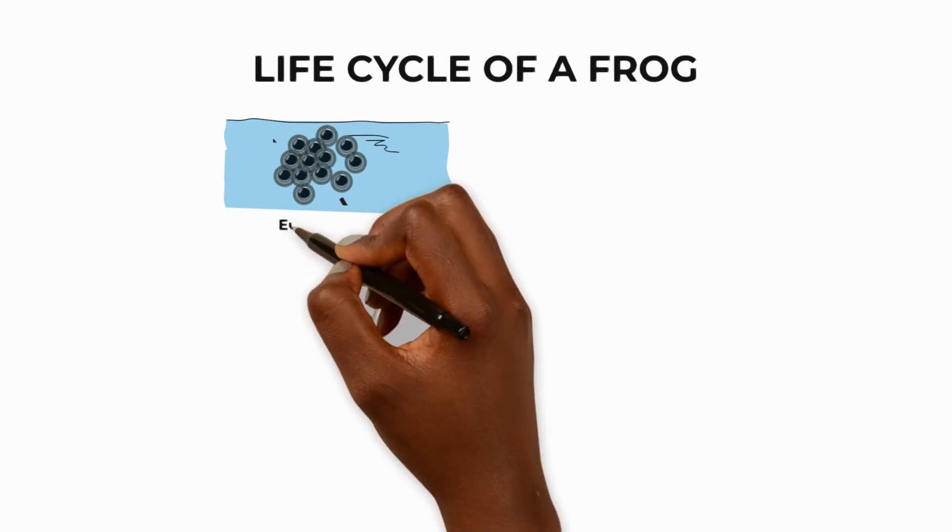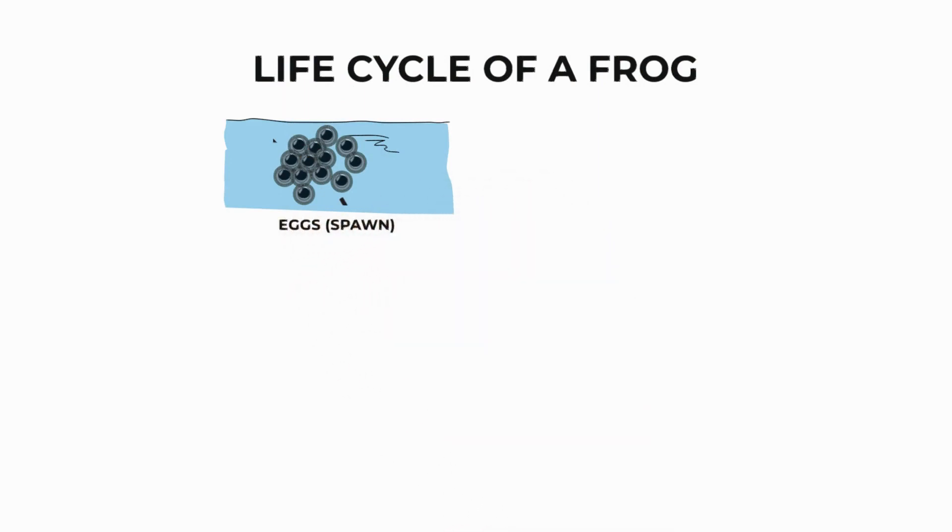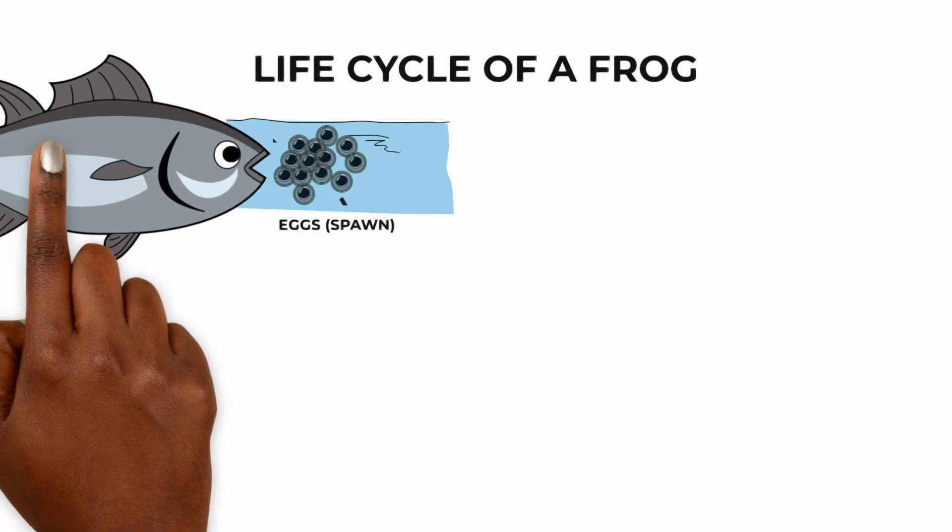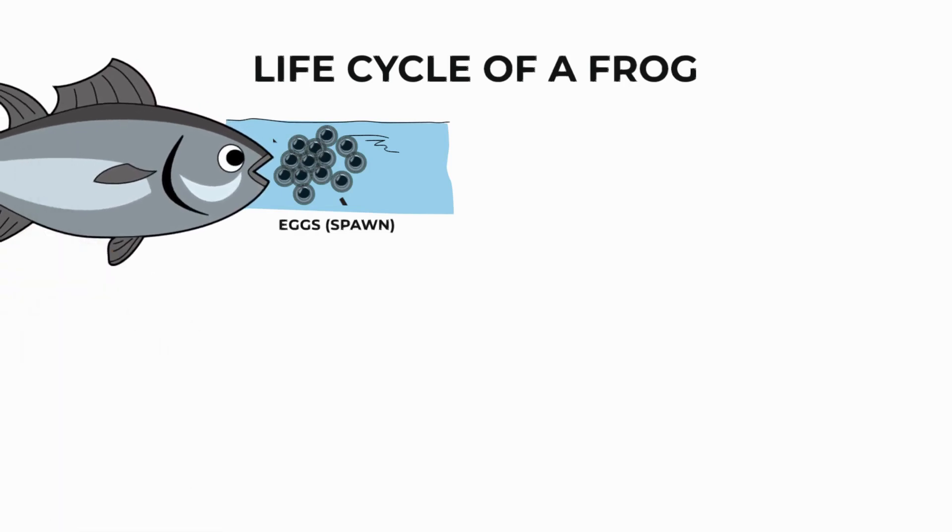In March you might see clusters of frog spawn floating on the surface of a pond. These are groups of soft eggs that have been laid by the mother, protected by a jelly coating. The mother can lay up to 30,000 eggs but not all of them survive due to predators such as insects, fish and other animals.